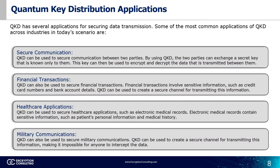Quantum key distribution offers unparalleled security for transmitting sensitive data. Starting with secure communication: QKD ensures secure communication between any two parties by establishing a secret key known only to them, used to encrypt and decrypt the data they exchange. Unlike traditional encryption, any attempt to eavesdrop on the communication will be detected due to the inherent properties of quantum mechanics, rendering the data unreadable. This makes QKD ideal for protecting sensitive information in areas like government communications, corporate secrets and intellectual property, and critical infrastructure control systems.